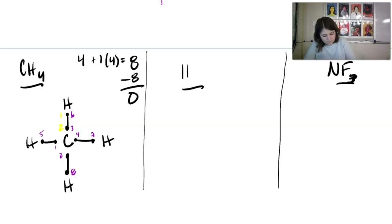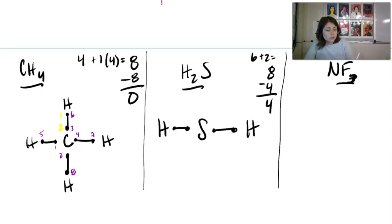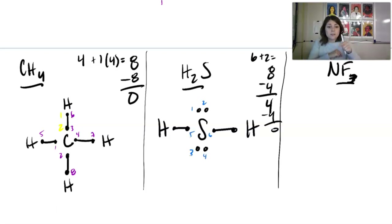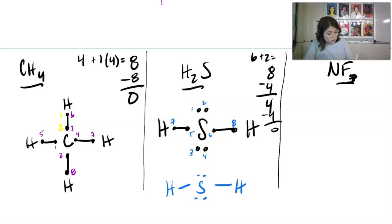Next example: H2S. Sulfur has six valence electrons and there are two hydrogens, giving eight total. Draw sulfur in the middle with hydrogens on the sides and single bonds. Two bonds times two equals four electrons used, leaving four. Hydrogens are done, so the remaining four electrons go on the sulfur as lone pairs. Sulfur reaches eight sharing — the final clean structure shows just sulfur with two lone pairs bonded to two hydrogens.